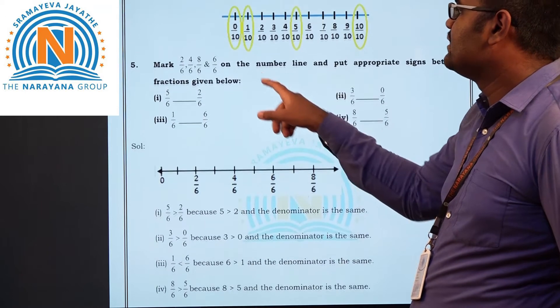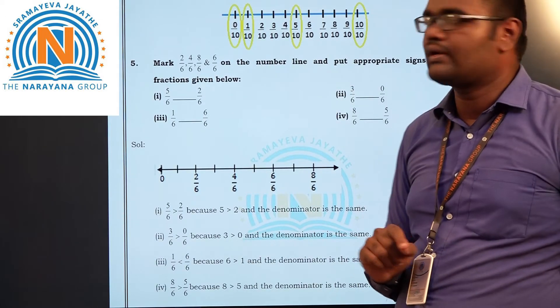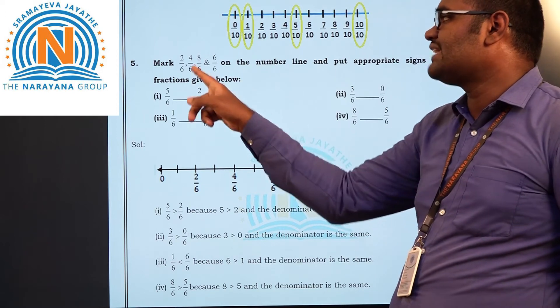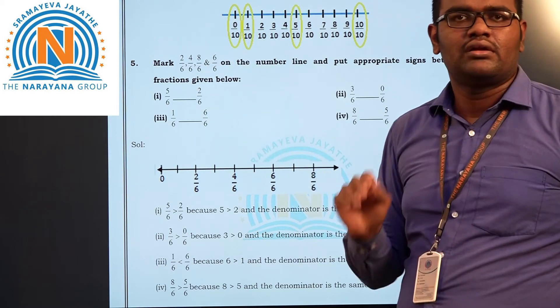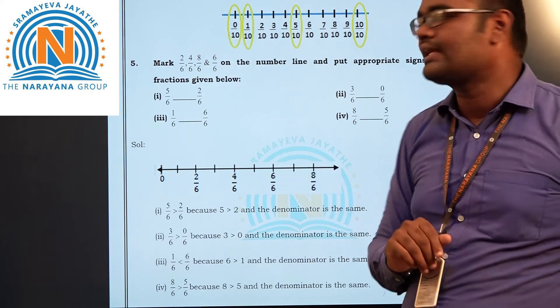Same here. Mark the number line and put appropriate signs between the fractions. If the denominators are same, numerators will have no problem. Directly we can compare. If 2 is a small number, 4 is a greater number. Like that, we can compare.